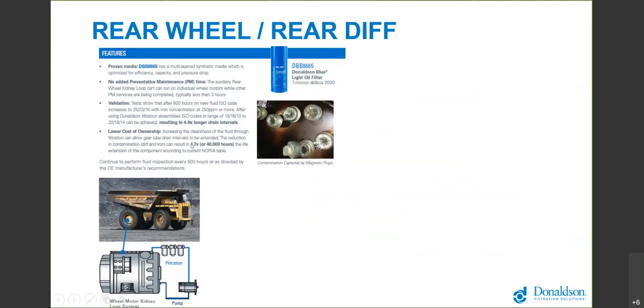Via the Noria life extension table, that offered us a 1.7 life extension, and we were able to prove that where that 25,000 hour rebuild schedule was making all the way out to 40,000 hours. We were dropping iron counts from 250 parts per million down to 50 parts per million.